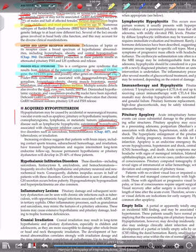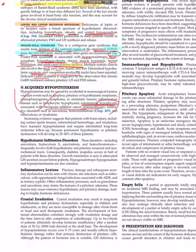Infiltrative disorders such as sarcoidosis, hemochromatosis, tuberculosis or radiation. Increasing evidence suggests that patients with brain injury including contact sports trauma, subarachnoid hemorrhage, and irradiation have transient hypopituitarism and require intermittent long-term endocrine follow-up because permanent hypothalamic or pituitary dysfunction may develop in 25 to 40 percent of these patients. So any traumatic brain injury, we have to keep a follow-up of the hormonal workup, pituitary workup even after a few months to check for any permanent damage.